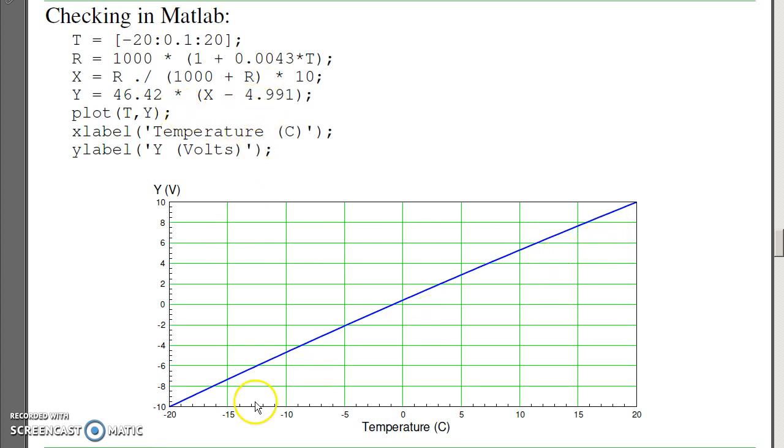If I plot this, this is the output versus temperature. Notice I'm going from minus 10 volts to plus 10 volts as temperature goes minus 20 to plus 20. That meets my requirements. Also note that at zero, the mid-band, I'm not quite at zero. The reason for that is the non-linearity of the voltage divider.